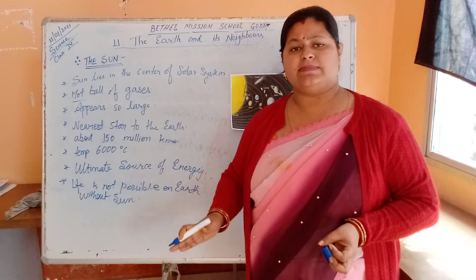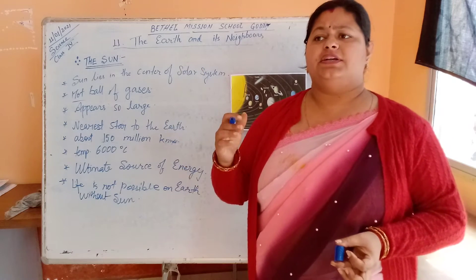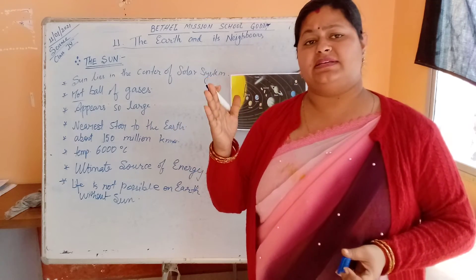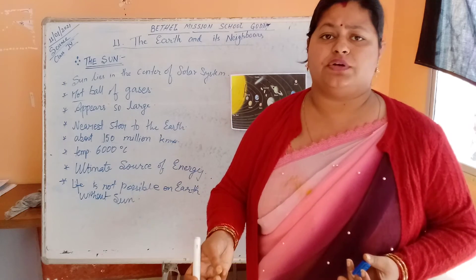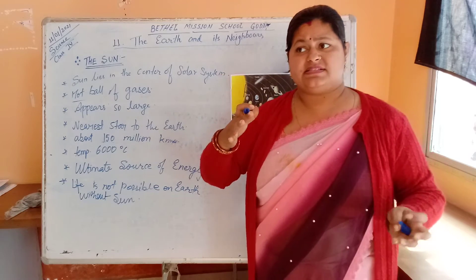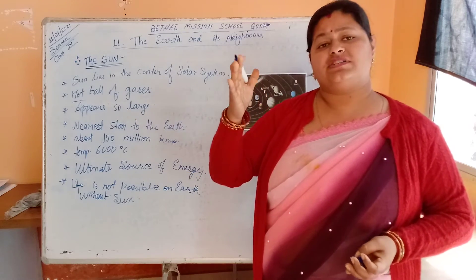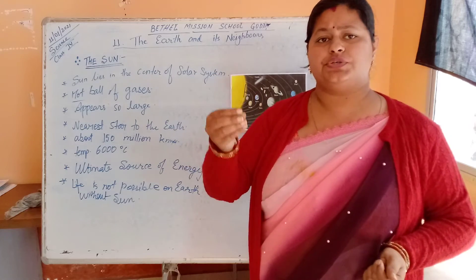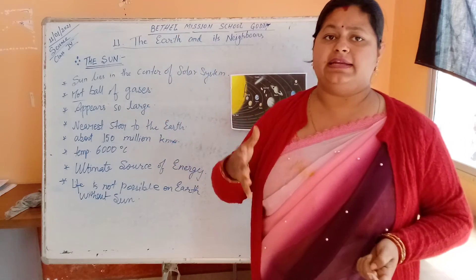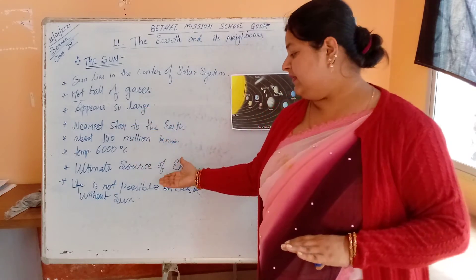Life is not possible on earth without the sun. Suppose there is cloudy weather and we cannot see the sun for 2 or 3 days — we cannot dry our clothes, things become smelly, and the number of germs increases due to the absence of sunlight. Sunlight contains rays that help kill germs, provides heat and light. In short, the sun is the ultimate source of energy.